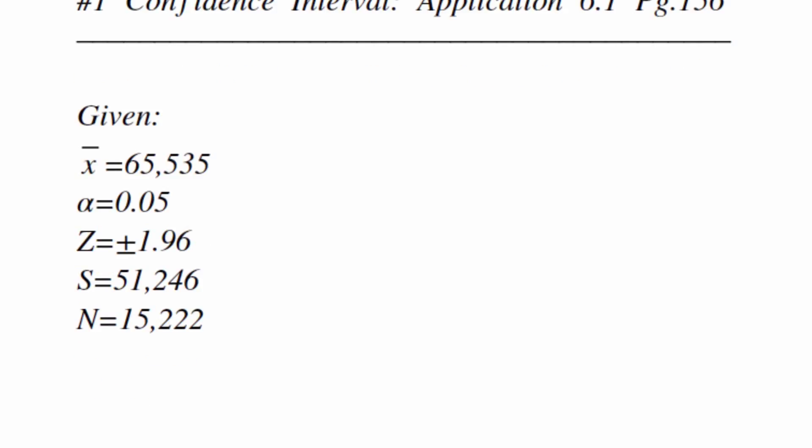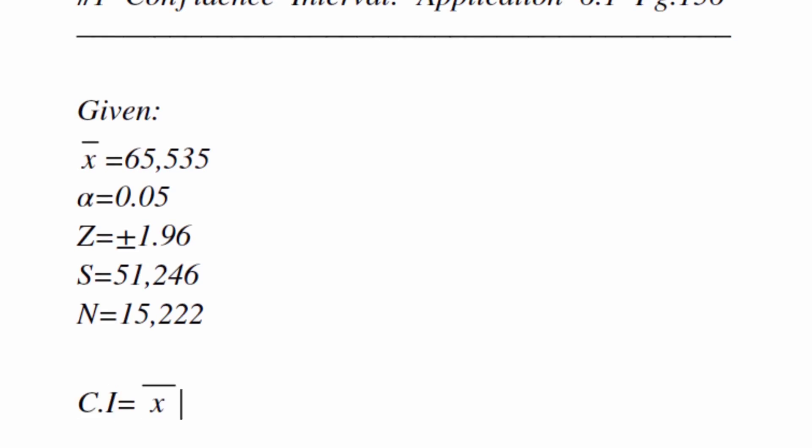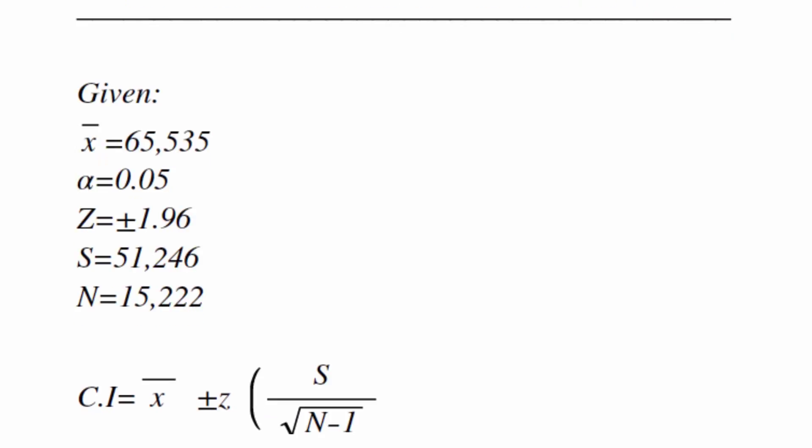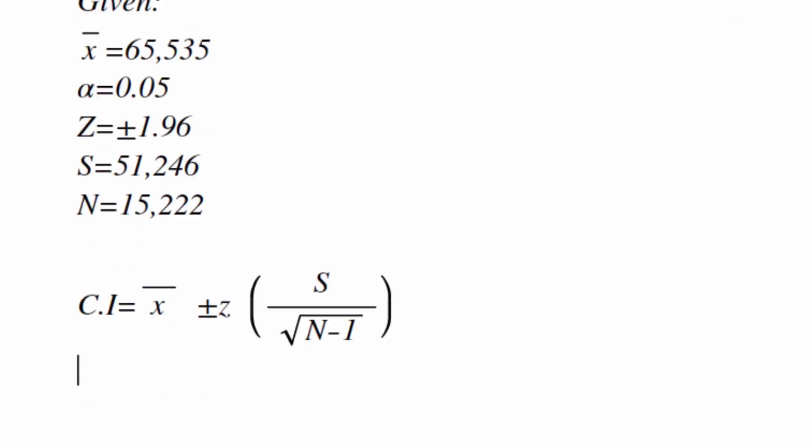Step 2: As mentioned before, let's write out our confidence interval equation. The equation is: CI = x̄ ± z(s / √(n − 1)).